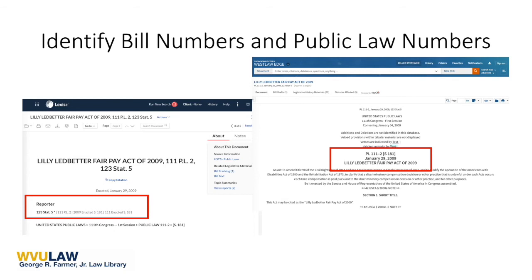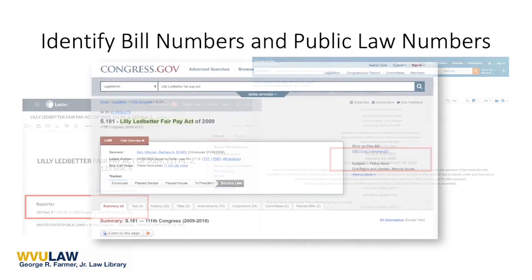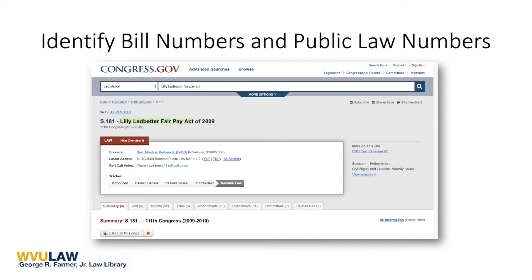However, it's not necessary to have a subscription to a research platform like Lexis or Westlaw to find legislative information. Another option that is user-friendly and freely available as a service from the Library of Congress is congress.gov. This image shows the results of a search for the name of the legislation on congress.gov, where I find the public law number, the bill number, and the other descriptive information about the law that I need.